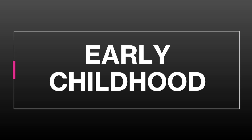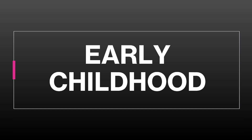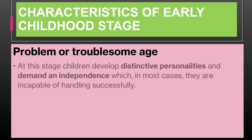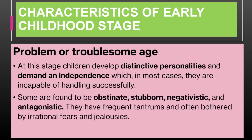Now let's look at the characteristics of early childhood, from the end of infancy to around age 6. As mentioned on our slide, the first characteristic is the Problem or Troublesome Age. At this stage, children develop distinctive personalities and demand an independence which, in most cases, they are incapable of handling successfully. Some are found to be obstinate, stubborn, negativistic, and antagonistic. They have frequent tantrums and are often bothered by irrational fears and jealousies. For example, a three-year-old might throw a tantrum when denied a toy, as they are learning to manage their emotions and desires.